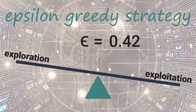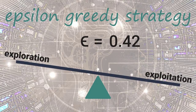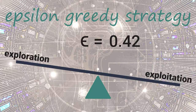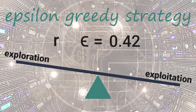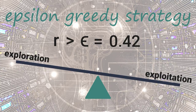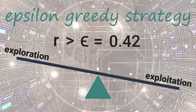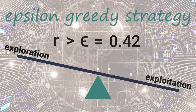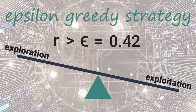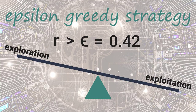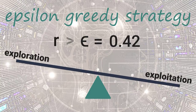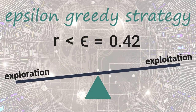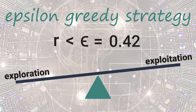To determine whether the agent will choose exploration or exploitation at each time step, we generate a random number between 0 and 1. If this number is greater than epsilon, then the agent will choose its next action via exploitation — i.e., it will choose the action with the highest Q-value for its current state from the Q-table. Otherwise, its next action will be chosen via exploration, i.e., randomly choosing its action and exploring what happens in the environment.